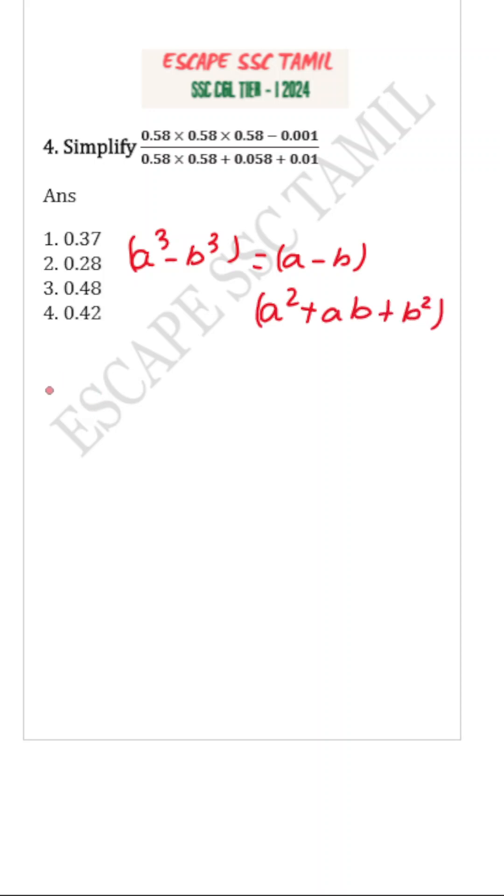Now if we look into the question, we can easily see that the numerator is in the format of a³ - b³ where a = 0.58 and b = 0.1, whereas the denominator is in the format of a² + ab + b².